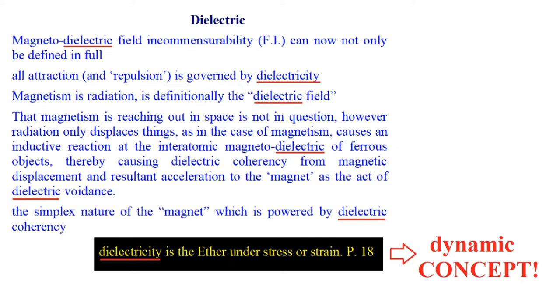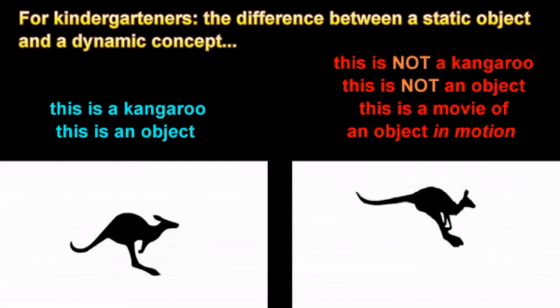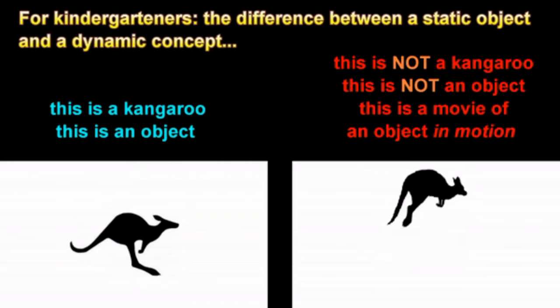So I looked up the other word: 'dielectric.' I go through all these dielectric instances — probably the most popular word in his book. I finally got to page 18 and found some measure of an idea of what dielectricity means. He says: is the ether under stress or strain? In other words, he's saying it's the ether under motion of some kind — a dynamic concept. He's talking about a jumping kangaroo. A jumping kangaroo is not a physical object; a kangaroo is an object. This guy does his physics with jumping kangaroos. Dielectricity is a jumping kangaroo. You need to get to the bottom of the ether, since everything is synonymous with ether.